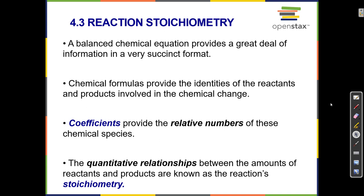The reason that stoichiometry is important is because if I have a recipe that says two eggs plus one cup of flour makes six pancakes, then it's easy for me to make twelve pancakes — you just have to double it. If it takes two eggs and one cup of flour for six, then it takes four eggs and two cups of flour for twelve.